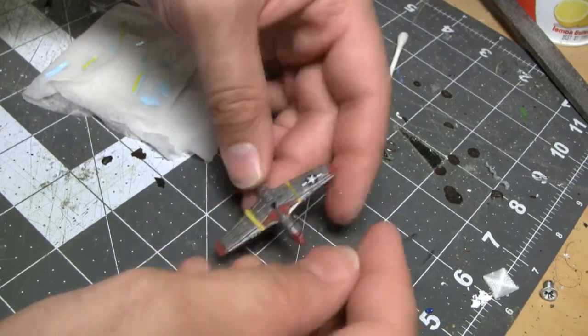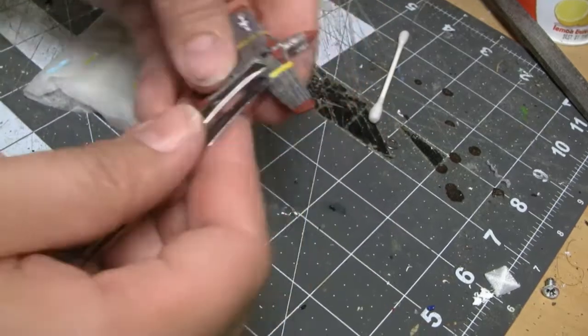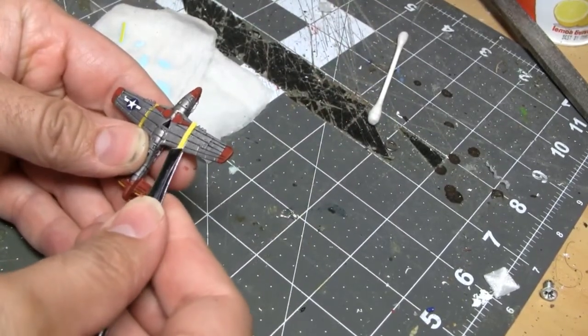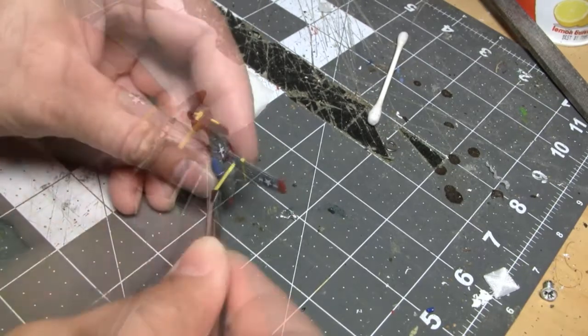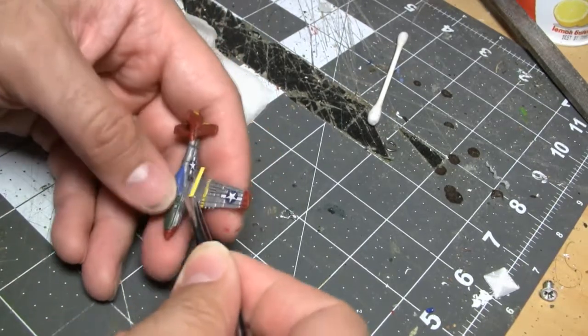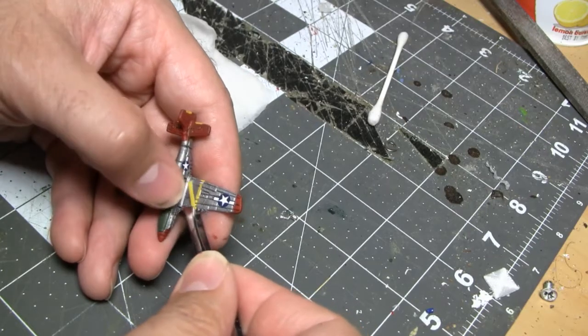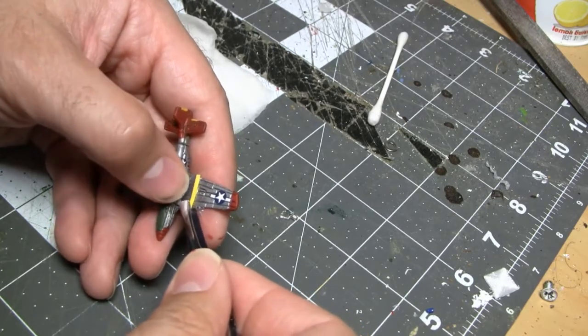For applying the water transfer decals of the yellow stripes, I want to start with the bottom first because the yellow stripes are a little bit longer than the width of the wings. So they're going to wrap just a tiny bit around the miniature. By starting with the bottom first, the breaks between the two decals will be on the bottom of the wing instead of the top.